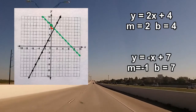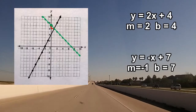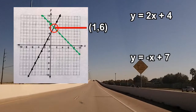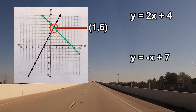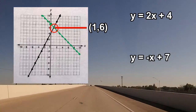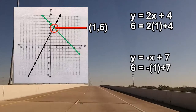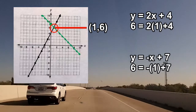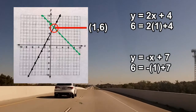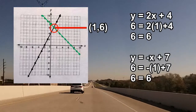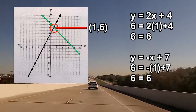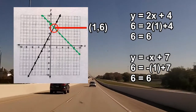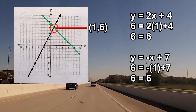Now we can connect the dots and form our second line. Notice the two lines form an x with an intersection point. Remember the intersection point will be the solution to the linear system. These two lines intersect at the point 1 comma 6. If you substitute the x and y coordinates of the intersection point into the equations of the system, it will satisfy both equations. Both equations work out to be 6 equal to 6. Therefore, 1 comma 6 is the solution to the systems of equations.